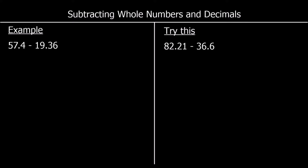Now subtracting. Like adding, the first step is to line up the numbers: tens with tens, ones with ones, tenths with tenths, hundredths with hundredths. I've got 57.4 on top and I'm taking 19.36 away from it, so that goes underneath.